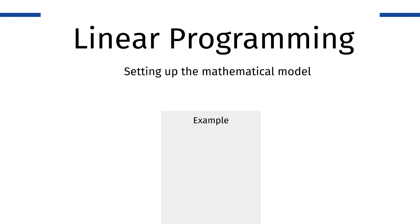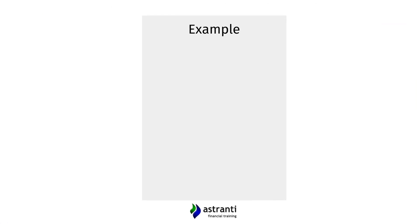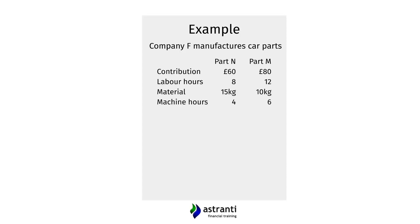Let's jump right in and consider a company called Company F, which manufactures car parts — specifically Part N and Part M. You've been put in charge of deciding how much of Part N and Part M the company should manufacture, and what combination of outputs would benefit Company F the most.